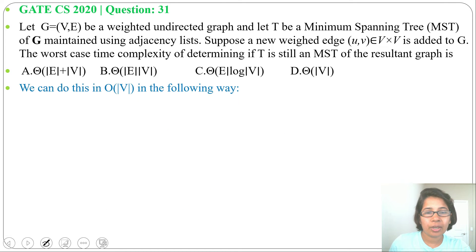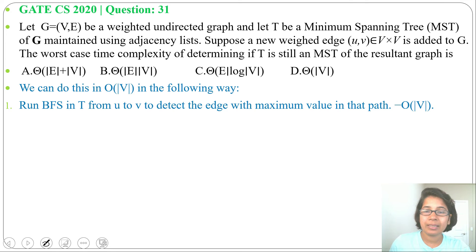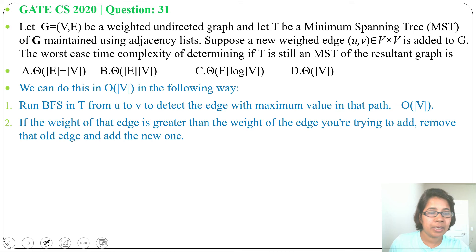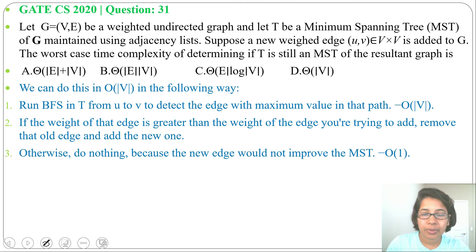We can do this in order of V in the following way. Run BFS in T from U to V to detect the edge with maximum value in that path, that will be order of V. If the weight of that edge is greater than weight of the edge you're trying to add, remove the old edge and add the new one. Otherwise, do nothing because the new edge would not improve the minimum spanning tree. So it will be order of 1.